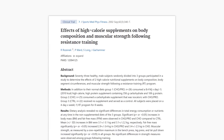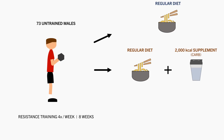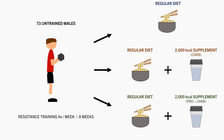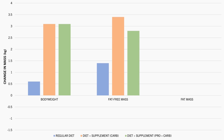This study explored the effects of a large calorie surplus on body composition changes in untrained subjects. 73 untrained males performed a hypertrophy-style resistance training protocol four times per week for eight weeks. One group consumed their regular diet. The second group were provided with a 2,000 calorie supplement consisting primarily of carbohydrates, and the third group were provided with a 2,000 calorie supplement with higher protein and less carbohydrates. After eight weeks, the maintenance group approximately maintained body weight, while the two surplus groups gained around 3kg each. Significant gains in fat-free mass were observed in all groups, with greater gains in the surplus groups. The maintenance group lost almost 1kg of fat mass, while both surplus groups approximately maintained fat mass.